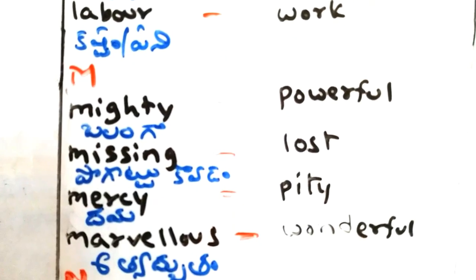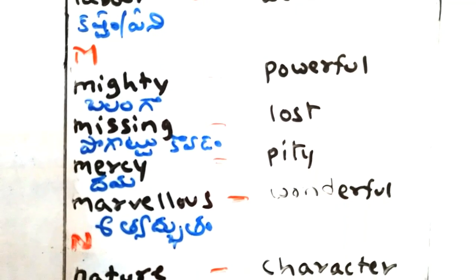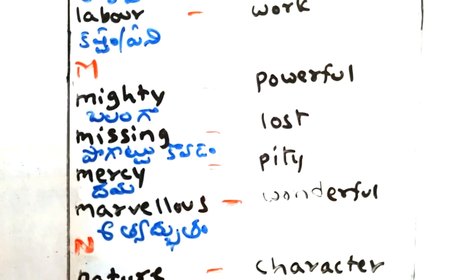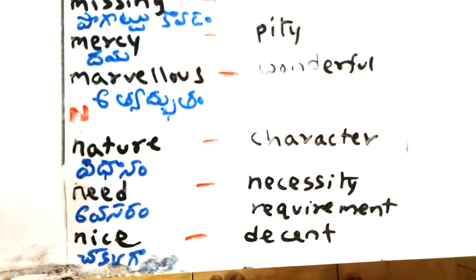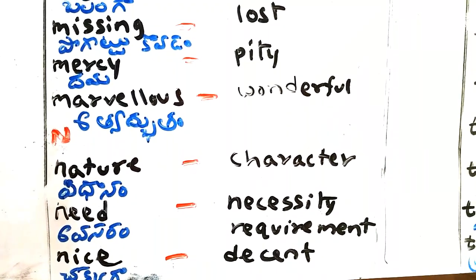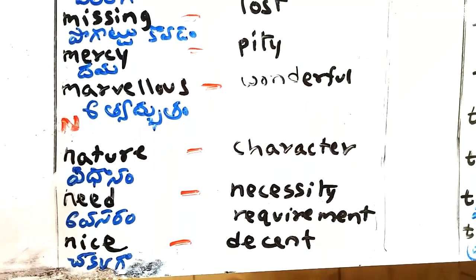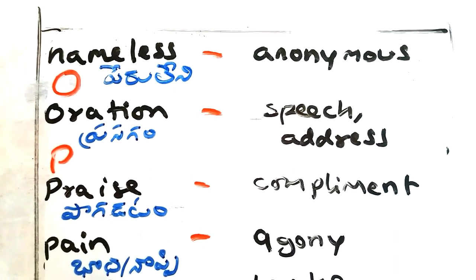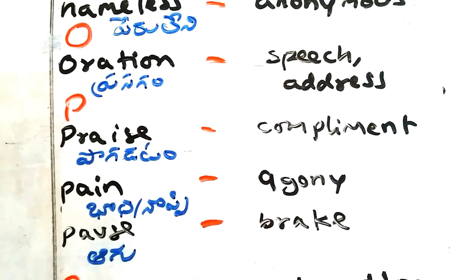Mighty - balanga, powerful. Missing - pogutukotam, lost. Mercy - daya, pity. Marvelous - athyadputam, wonderful. Nature - vidhanam, character. Need - avasaram, necessity. Nice - chakka, decent. Nameless - peeruleni, anonymous. Oration - prasangam, speech, address.